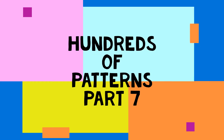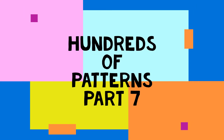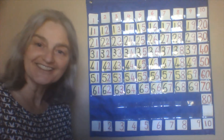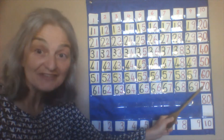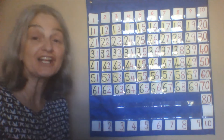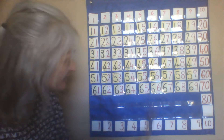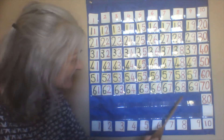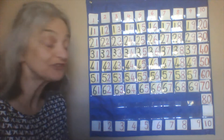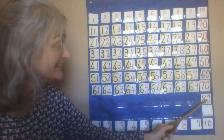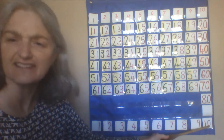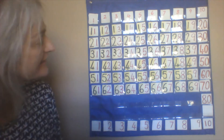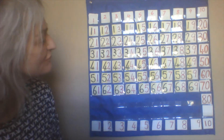Hundreds of Patterns, Part 7. Oh my goodness, Kindergarten, we are on 70 — being the ruler of the sevens. So they have to go down here, and then of course we only have to do 80, 90, and this number. So let's try it out.